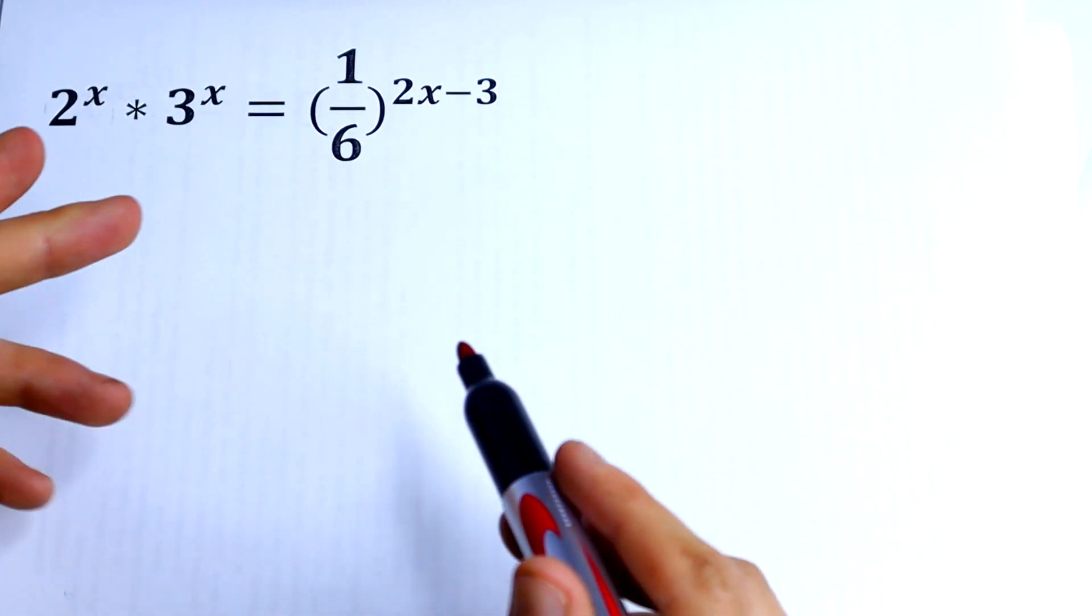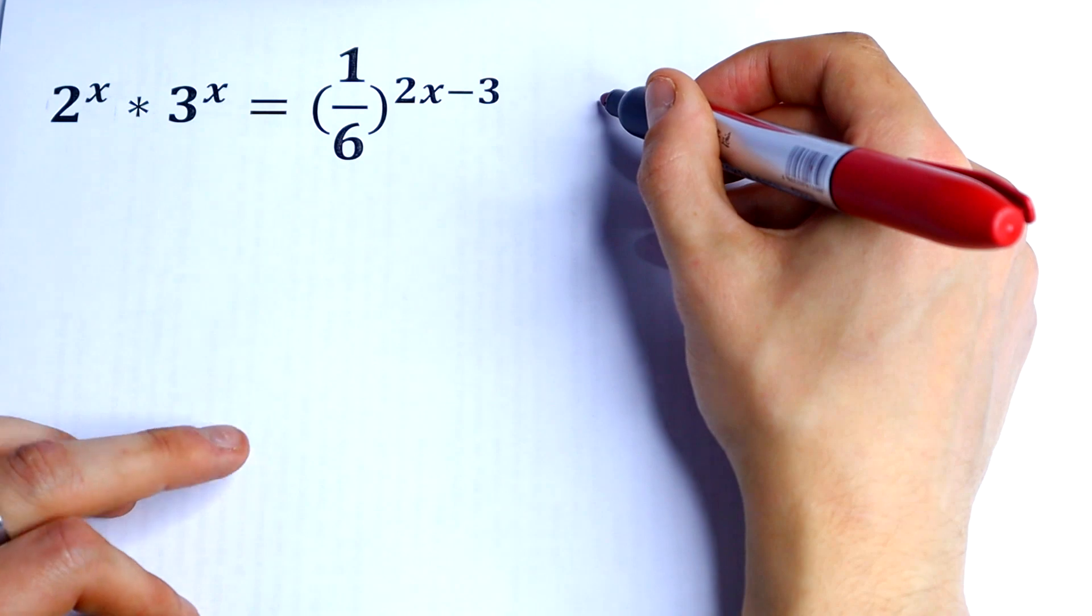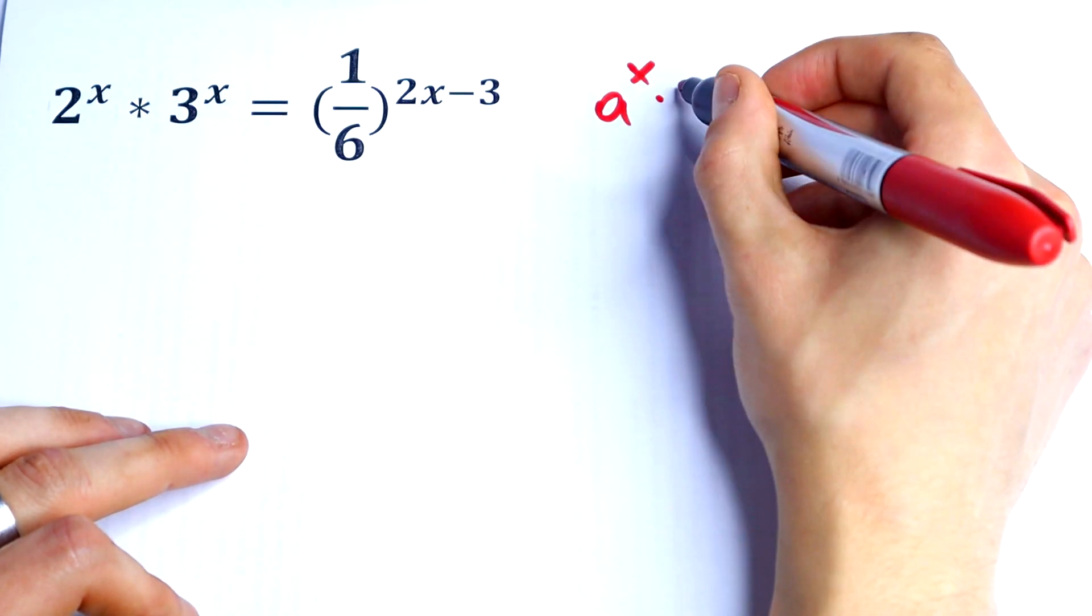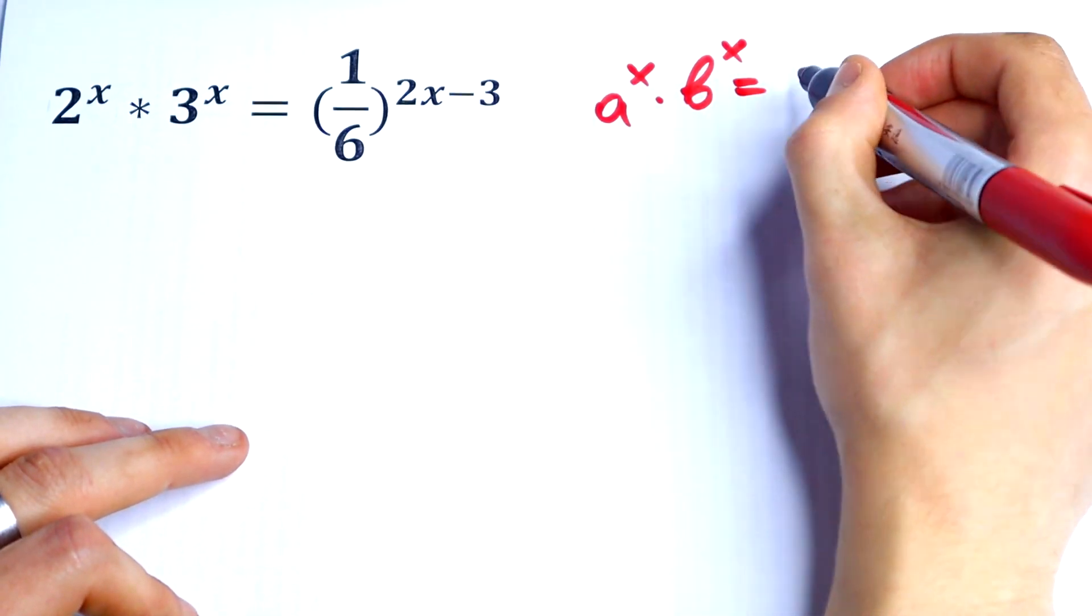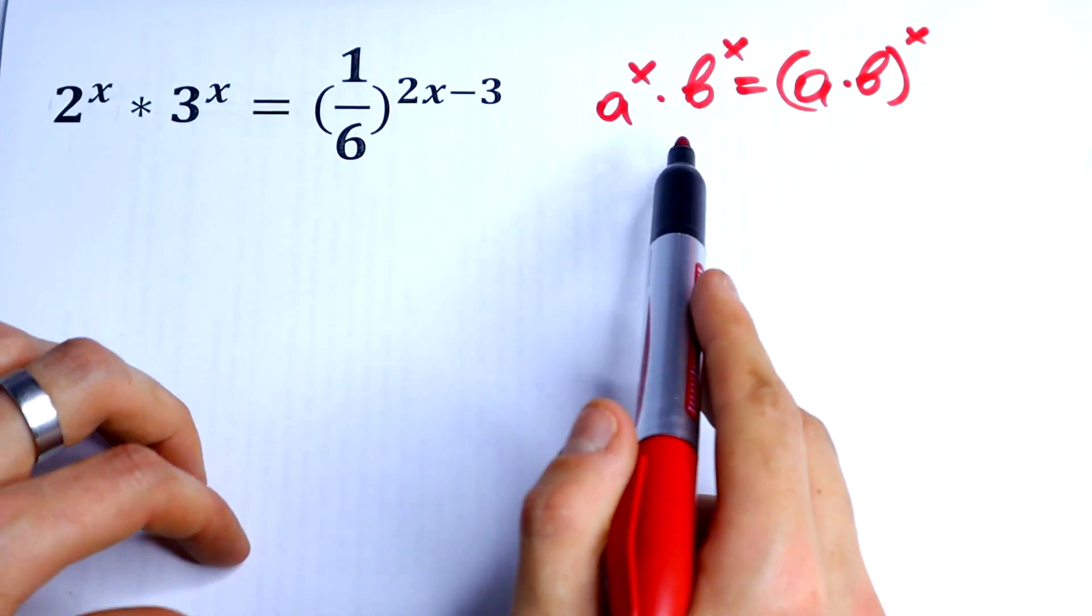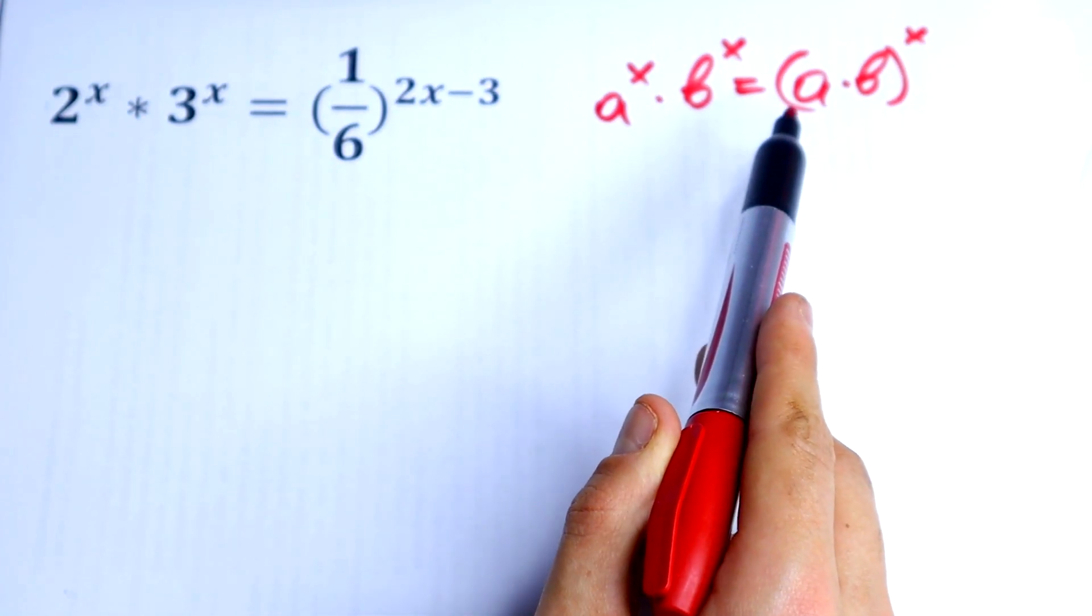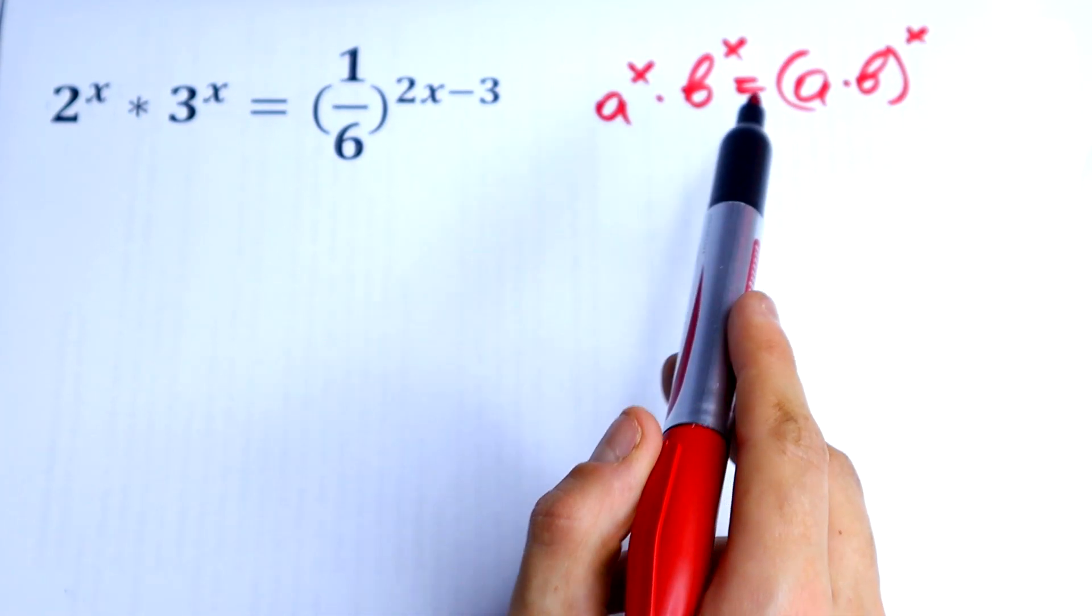What rules do we need? The first rule: when we have a^x times b^x, it equals (a times b)^x. So if we have the same exponent but different bases, we just multiply our bases as well.